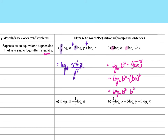Continuing to simplify: log base a of b to the fifth x squared, since three plus two equals five for the b exponents. That was complex but manageable.